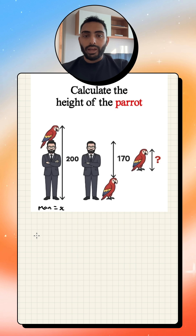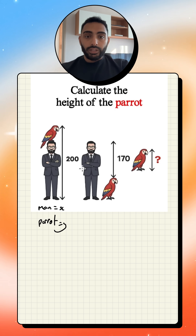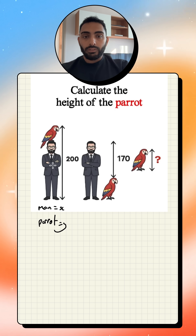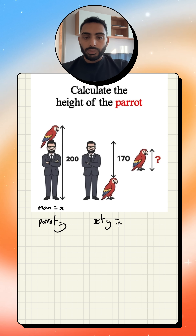I'm going to call him X and I'm going to call the parrot Y. I can create two equations based on this. When I have the man plus the parrot — X plus Y — that gives me 200.